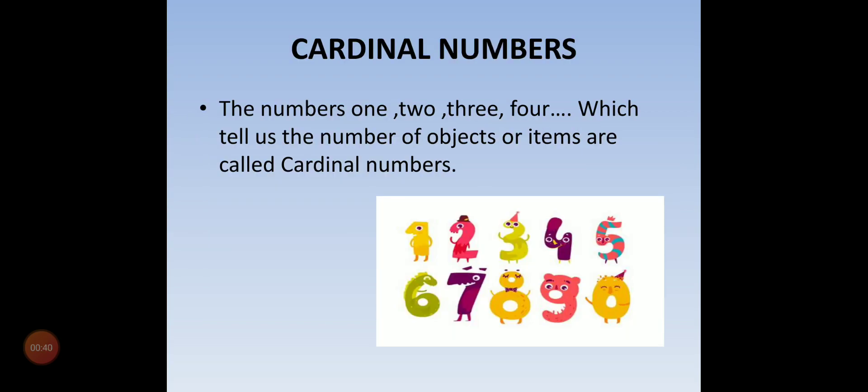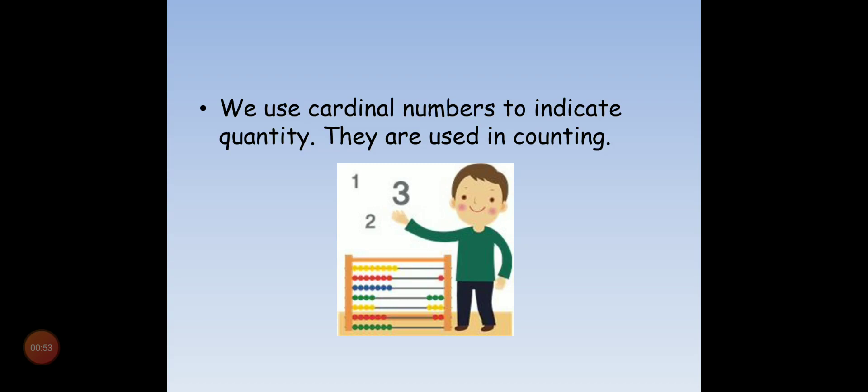What are cardinal numbers? The numbers 1, 2, 3, 4 which tell us the number of objects or items are called cardinal numbers. We use cardinal numbers to indicate quantity. They are used in counting.